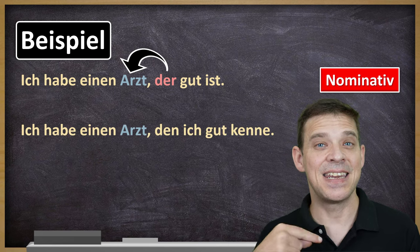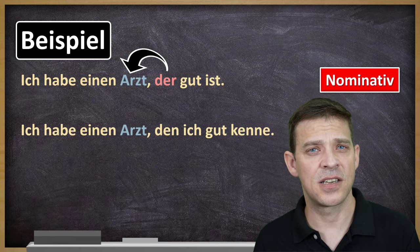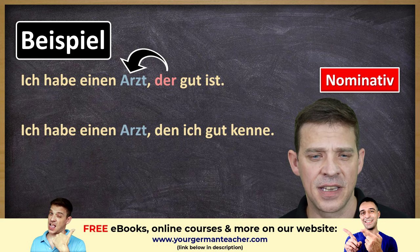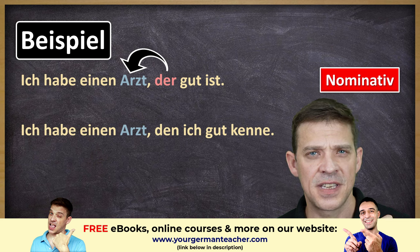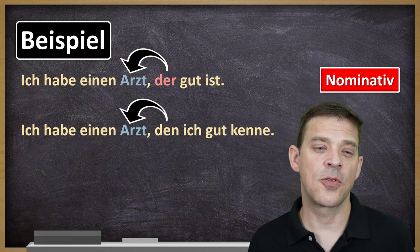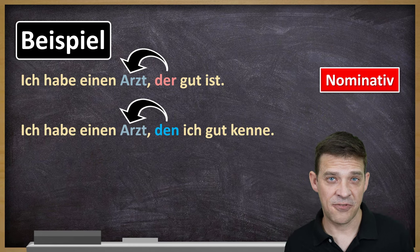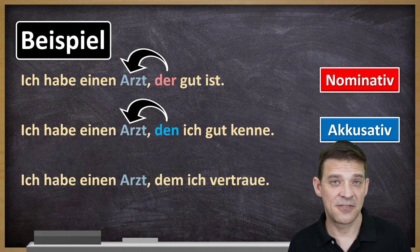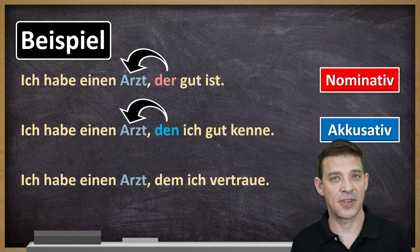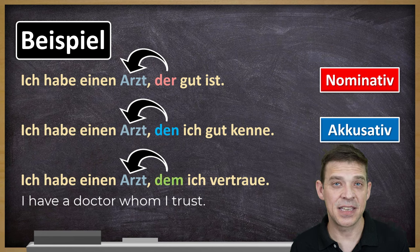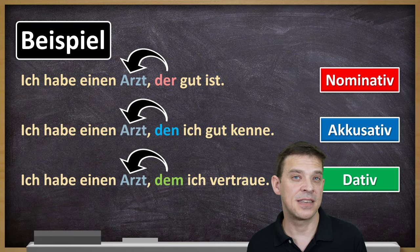Ich habe einen Arzt, den ich gut kenne. I have a doctor who I know well. Here we still have Arzt, but there we have Ich, and Ich is the subject in nominative case — so that's already given. Therefore, the relative pronoun is in Akkusativ, because of the verb kennen. And a dative sentence: Ich habe einen Arzt, dem ich vertraue. Here, dem, the relative pronoun, is also masculine and singular, but it is in dative case — because of the verb vertrauen, which is a dative verb.